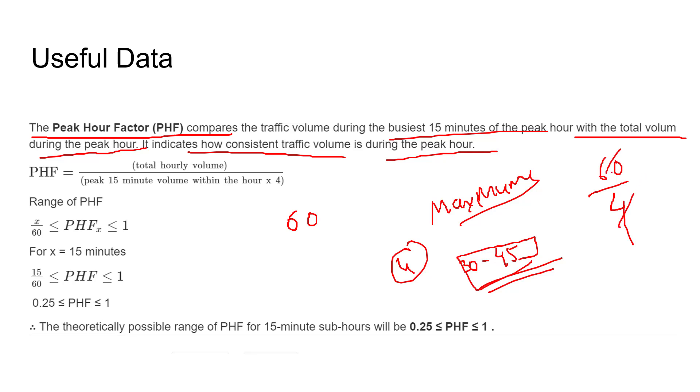60 divided by 4, so there will be 15 vehicles per slot, so that will be one vehicle per minute accordingly. Suppose we take 15 vehicles traveling in 15 minutes, but in this third slot 20 vehicles will be traveling.